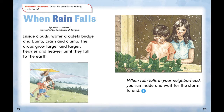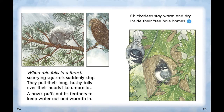Let's read on and see if my prediction is correct. When rain falls in a forest, scurrying squirrels suddenly stop. They pull their long, bushy tails over their heads like umbrellas. A hawk puffs out its feathers to keep water out and warmth in. Chickadees stay warm and dry inside their tree-hole homes. I will check my predictions from time to time as I read. The author is now talking about what some animals do in a rainstorm, and there's no mention of the children. The author did not tell what the children are doing, but I'm going to keep reading to see if my prediction is right later.